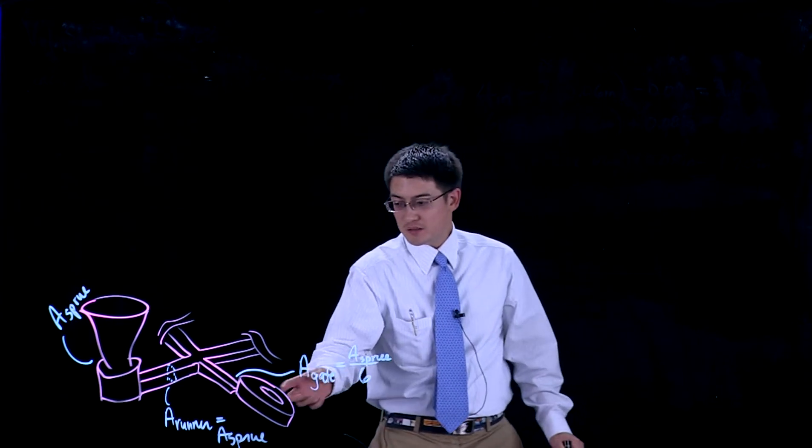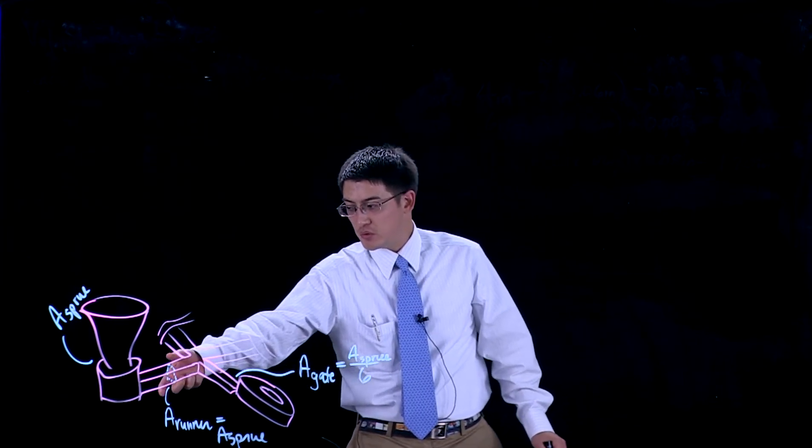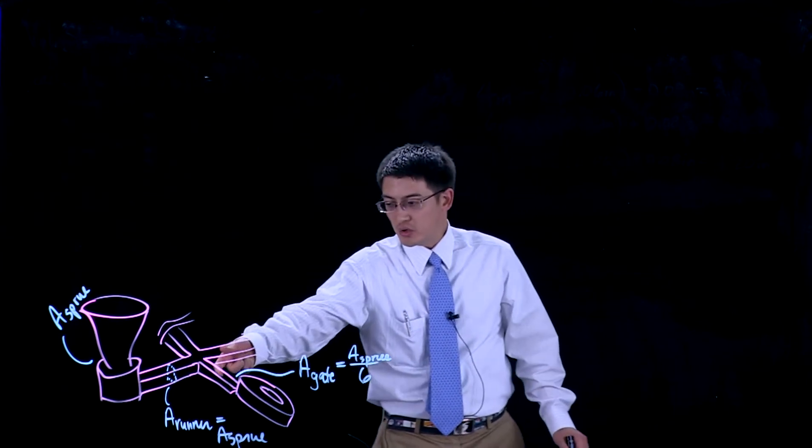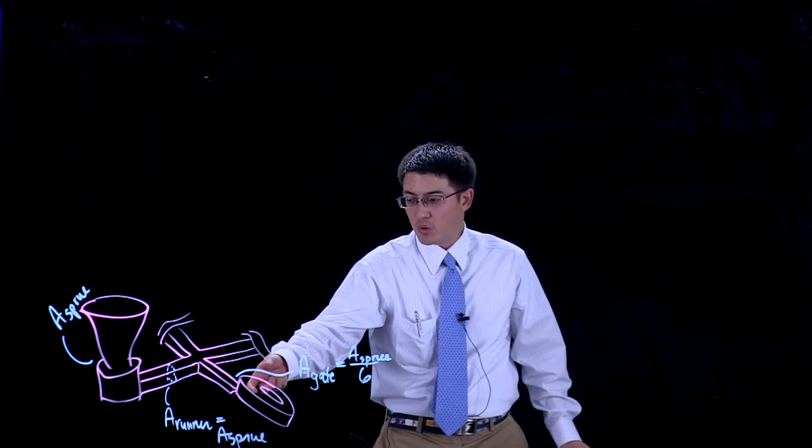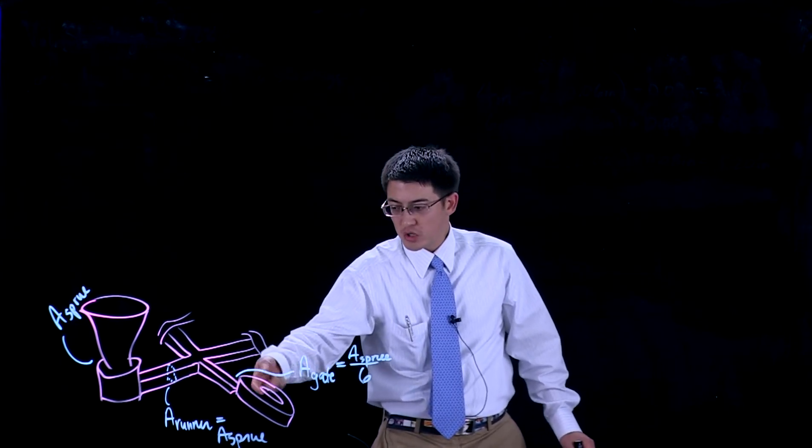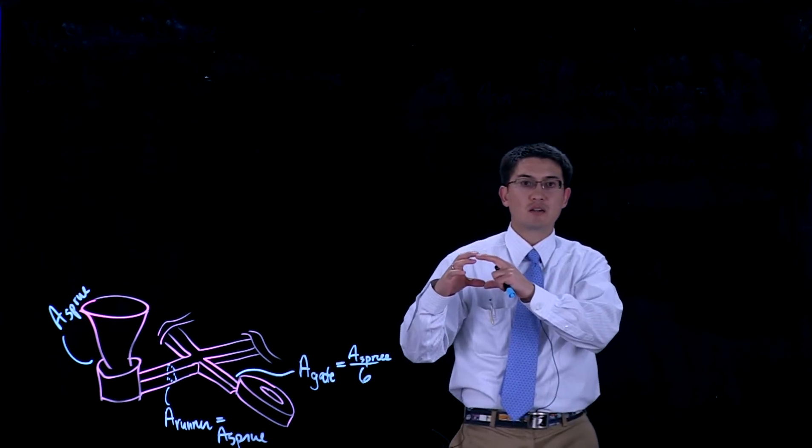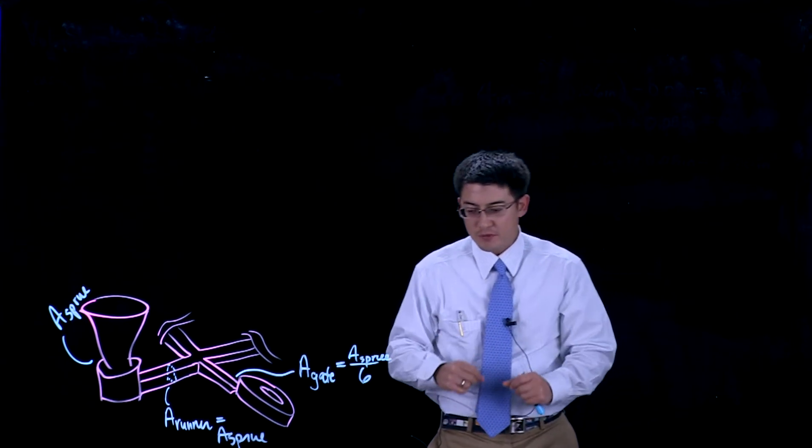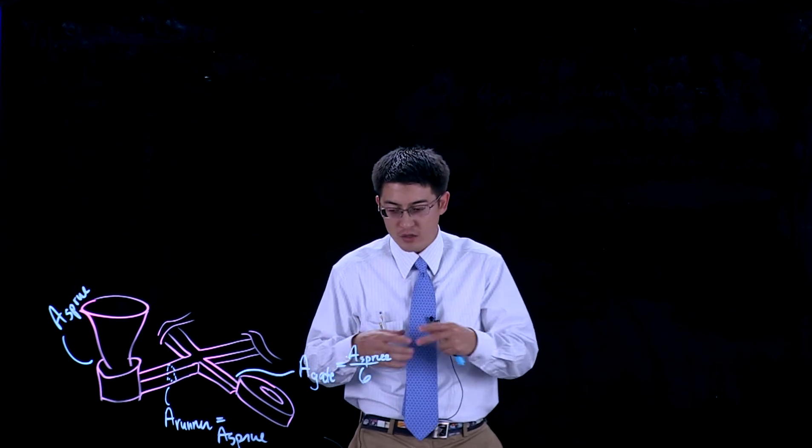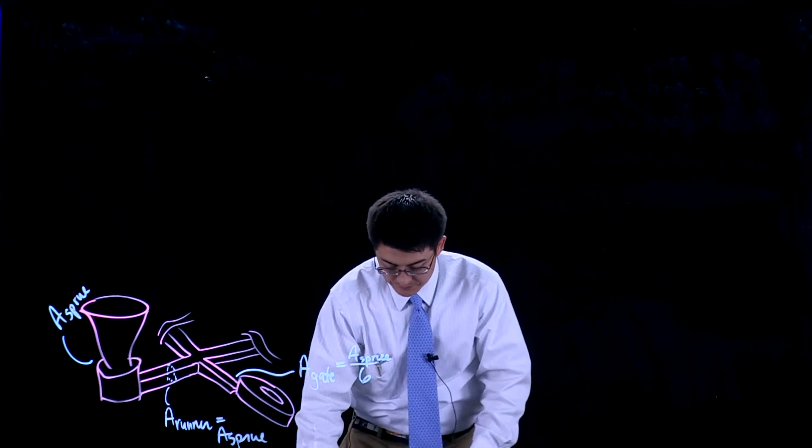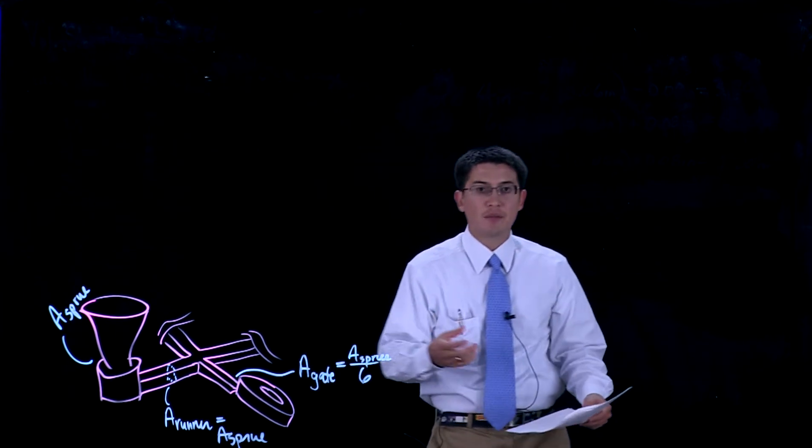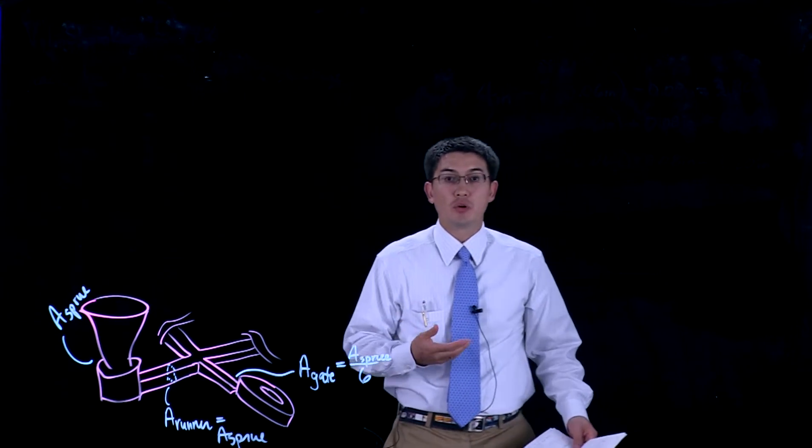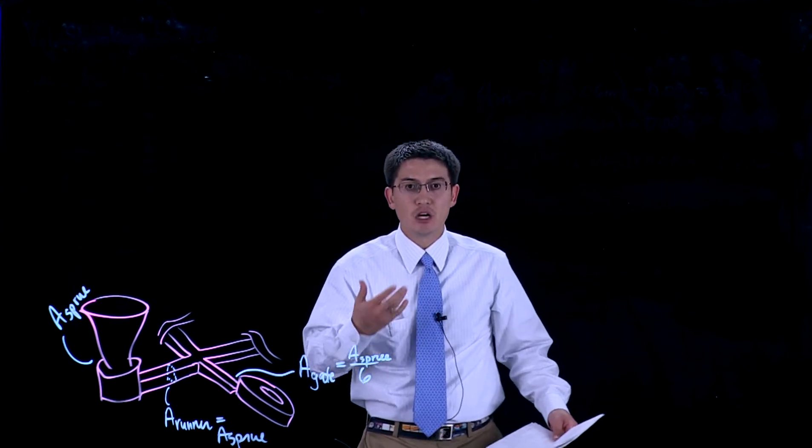If you had this gate area equal to the sprue cross-sectional area, you'd only have a sixth of the total flow going through that cross-sectional area. So you wouldn't be fully filling that runner and that gate, which is not good. So you choke down the gate cross-sectional area in order to maintain a constant, steady, full flow.